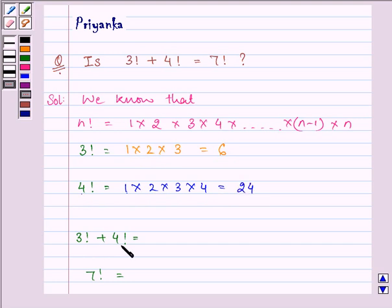Now we need to add. 3 factorial is 6, 4 factorial is 24. 6 plus 24 gives us 30. Now let us see whether this is equal to 7 factorial or not.